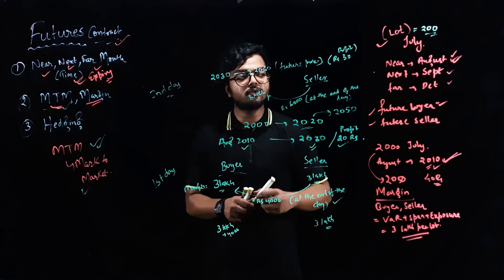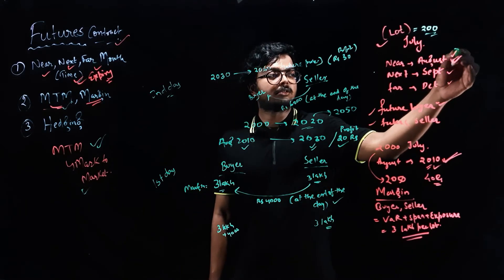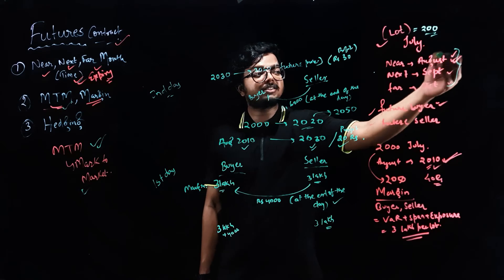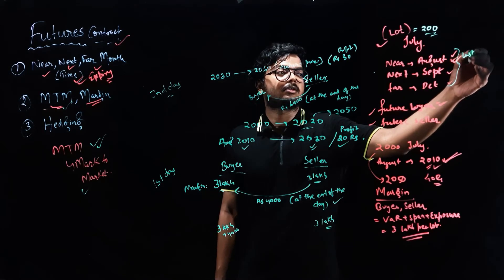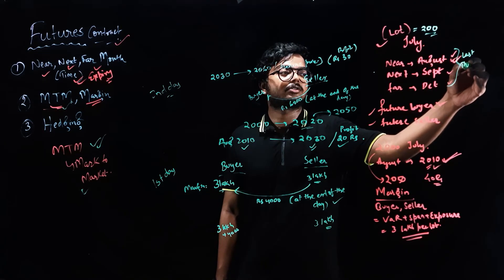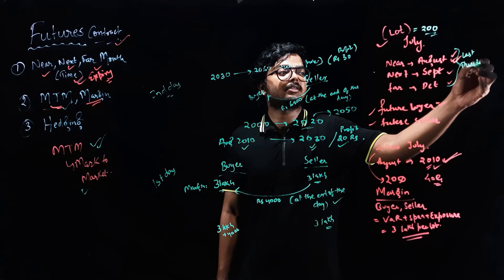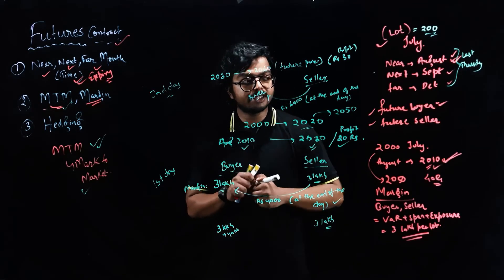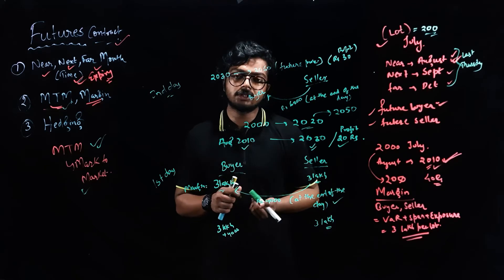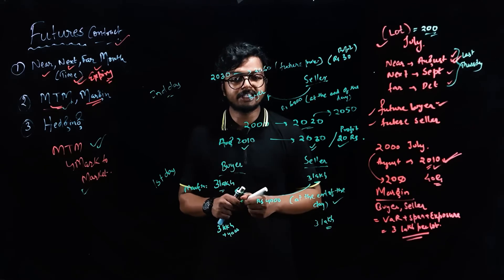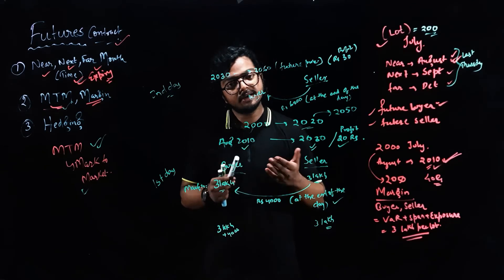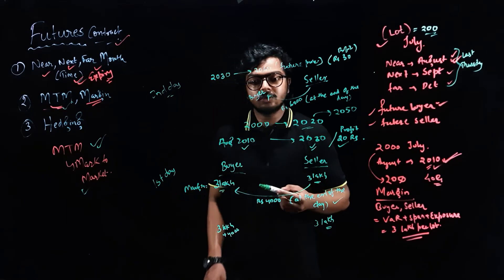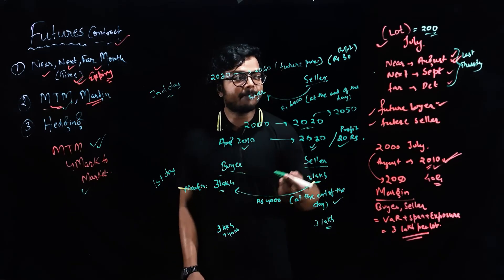This process would continue till expiry. The expiry is the last Thursday, similar to options. The last Thursday of August would be the expiry, last Thursday of September would be the expiry, and last Thursday of October would be the expiry. If the last Thursday is a holiday, just take the previous day, that is Wednesday.